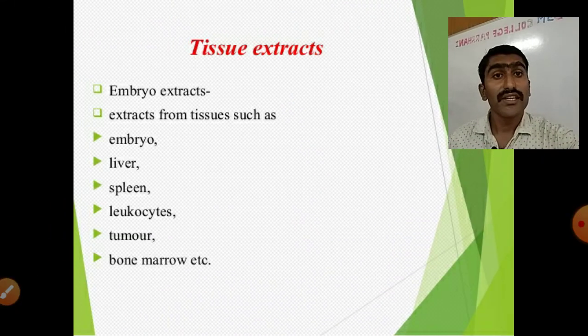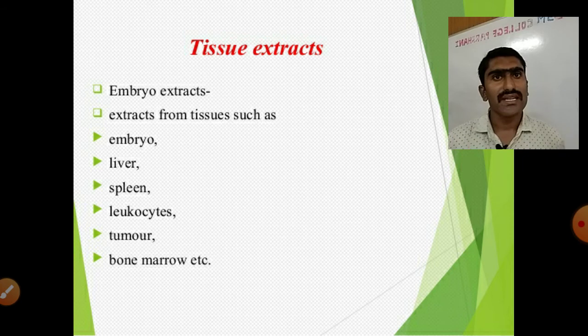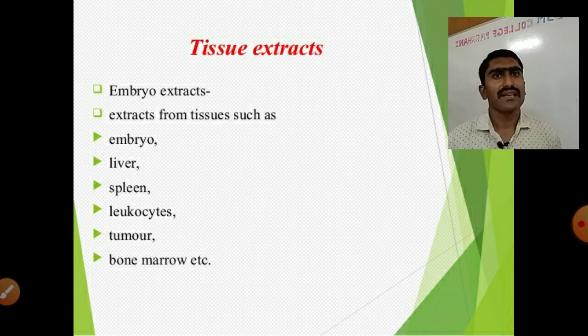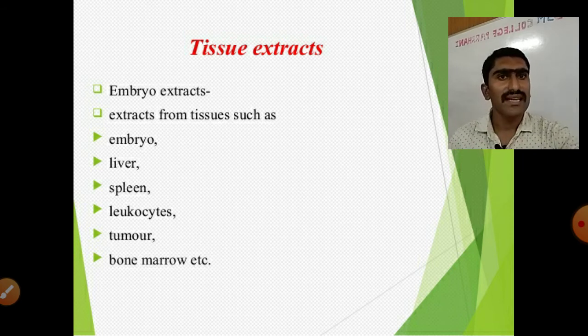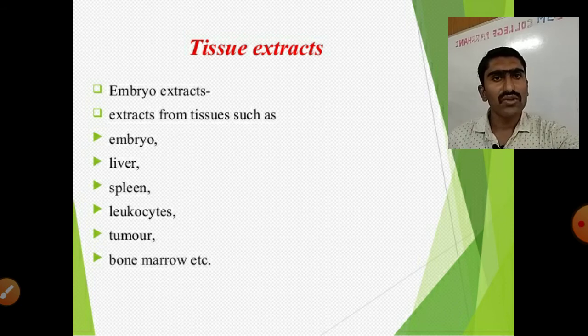Tissue extracts may be extracted from tissues such as embryo, liver, spleen, leukocytes, tumor, and bone marrow.